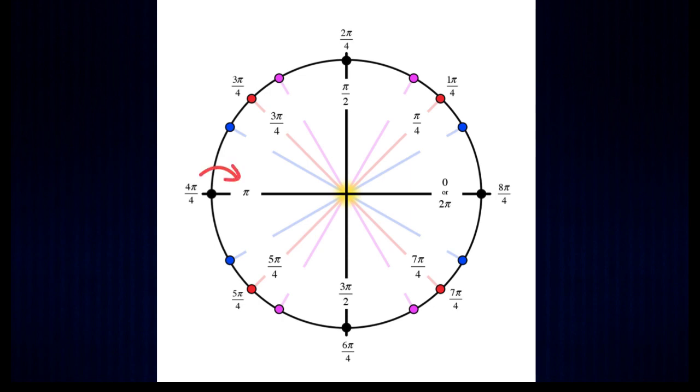Four pi over four reduces to pi, five pi over four stays the same, six pi over four reduces to three pi over two, seven pi over four stays the same, and eight pi over four reduces to two pi.